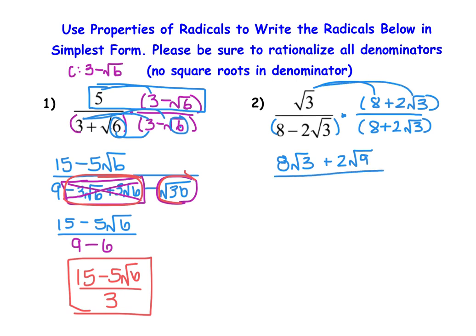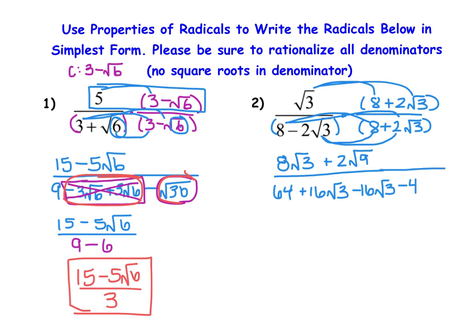For the denominator: 8 times 8 is 64. Then 8 times 2 square root of 3 gives plus 16 square root of 3. Then negative 2 square root of 3 times 8 gives negative 16 square root of 3. Then negative 2 times 2 is negative 4, and square root of 3 times square root of 3 is 9. This special situation occurs again where the plus 16 square root of 3 and minus 16 square root of 3 cancel out. Then we look for perfect squares to simplify further.